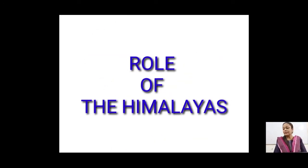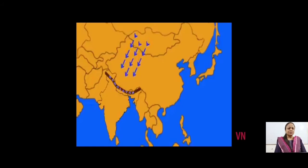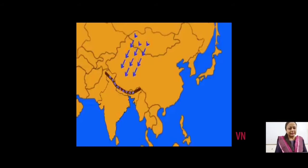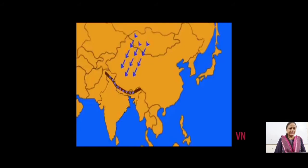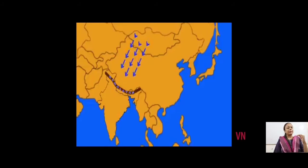The third factor in the list is the role of the Himalayas. You can see on the map that the Himalayas extend all over the northern part of the country and continue up to the northeast. The Himalayas consist of three parallel ranges: the highest known as Himadri Himalayas, then the middle range up to 6,000 meters known as Himachal Himalayas, and the lower Himalayas known as Shivaliks. These three parallel ranges affect the climate of India to a greater extent.